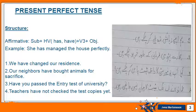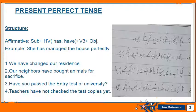Now see some examples. First: 'We have changed our residence.' According to the structure — subject 'we', helping verb 'have' used with 'we', third form of the verb 'changed', object 'our residence'. Number two: 'Our neighbors have bought animals for sacrifice.' Neighbors is plural so 'have' will be used.